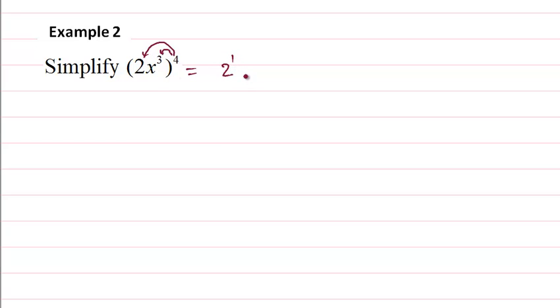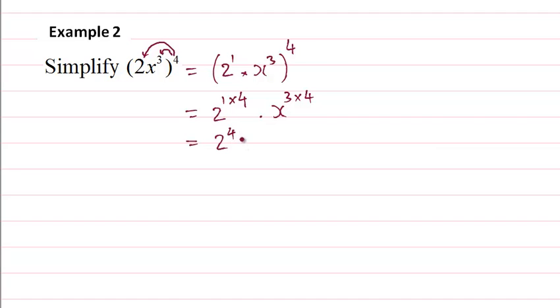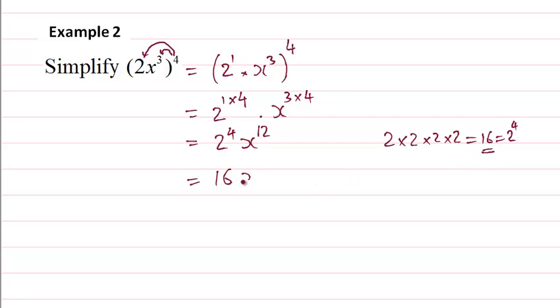Example two is the power of a power. Make sure this four belongs to everything here. So we write it as two to the power one times x to the power three, then raise to the power of four. This gives us two to the power one times four, then x to the power three times four. So we get two to the power four, then x to the power 12. The answer is 16x to the power 12.